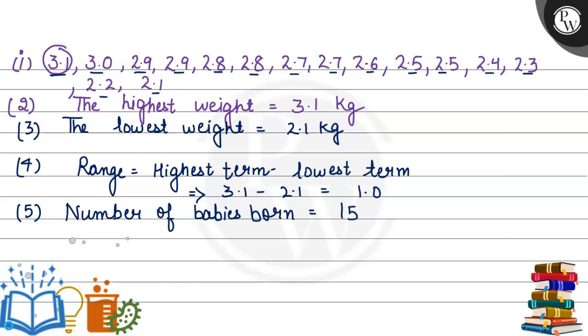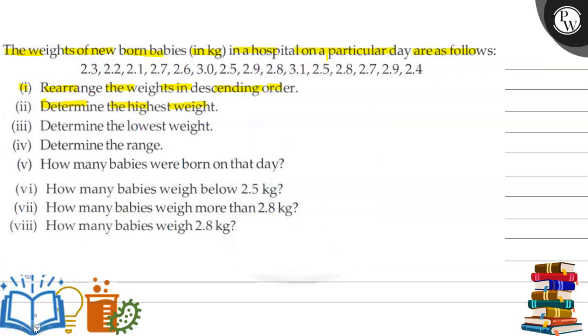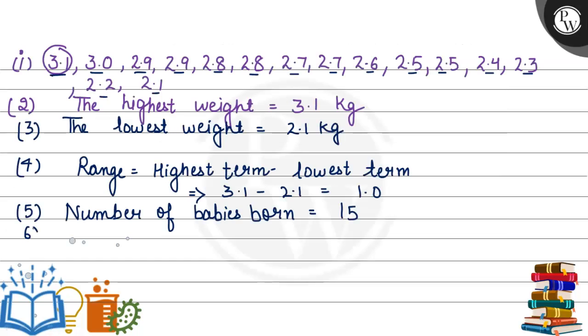Next part: how many babies weigh below 2.5 kg? Below 2.5, that will be 2.4, 2.3, 2.2, and 2.1. Therefore, four babies' weight is below 2.5 kg.